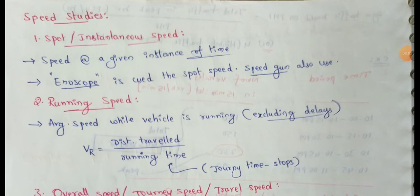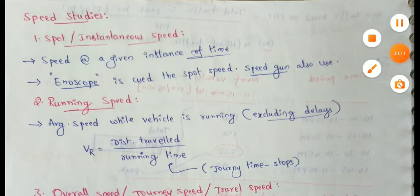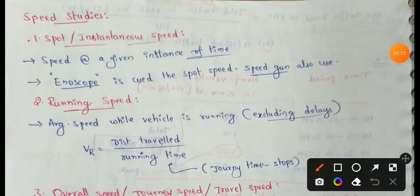Next topic: speed studies. There are three types of speed, and we will discuss them one by one in this video. First one is spot speed, also known as instantaneous speed.